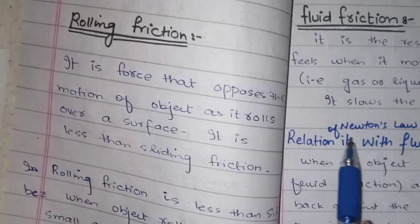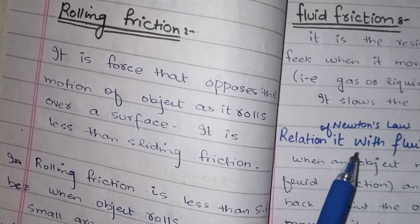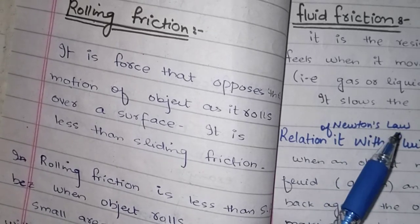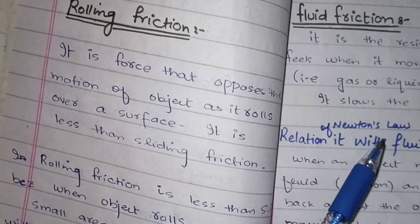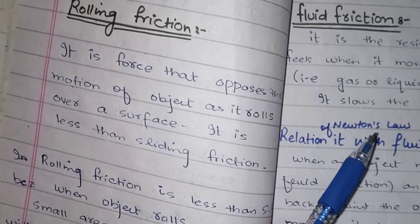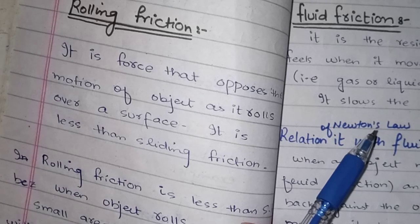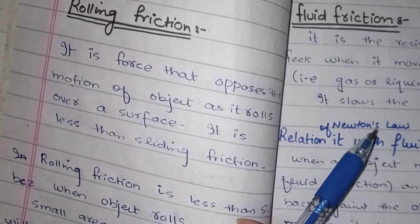Basically, friction is a force which keeps an object from moving or slows it down. If an object is moving, friction will try to reduce the speed of the object or stop it. We will look at the detail of friction, its advantages, and how rolling friction is used. Go to the playlist for previous lectures.